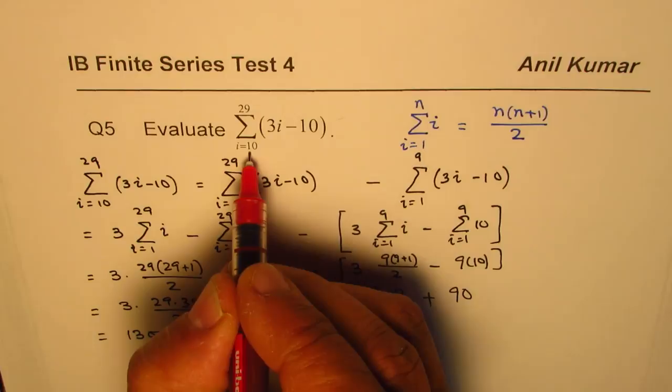Important thing here is to look at the lower bound. It is 10, it is not 1. So at times students might do a mistake by not considering i equals 10 to 29. I am Anil Kumar and I hope that helps you to avoid such mistakes in your test paper. Thank you and all the best.